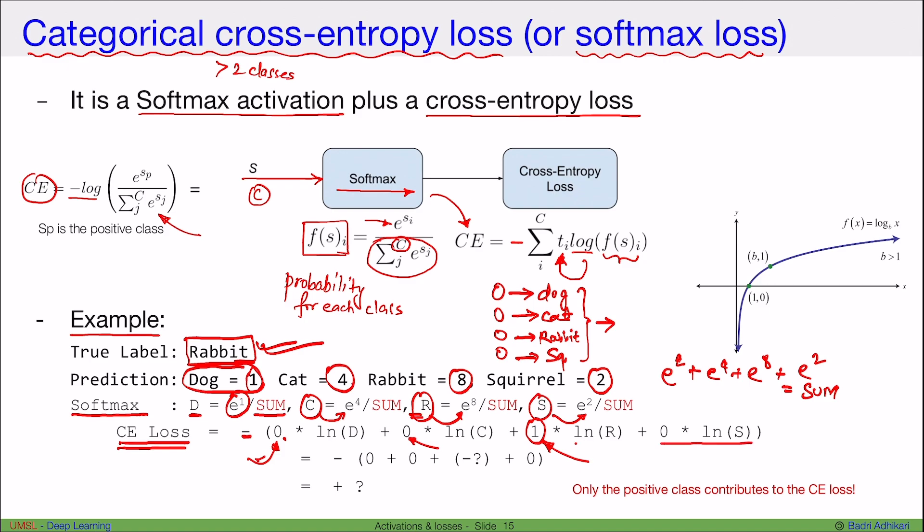So then we simply multiply or calculate the log of the probability for rabbit and negate it, and that's what gives us the cross-entropy loss. So it is simply negative of the log of probability for rabbit in this case. That's how the categorical cross-entropy loss is calculated. Now, it is interesting to note that only the positive class contributes to the cross-entropy loss here.